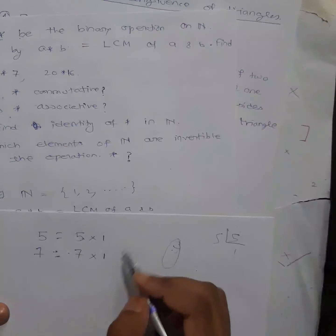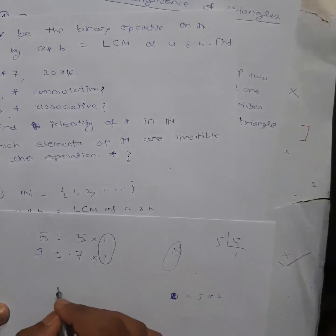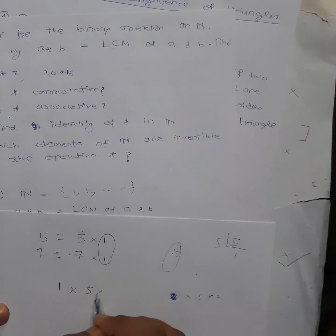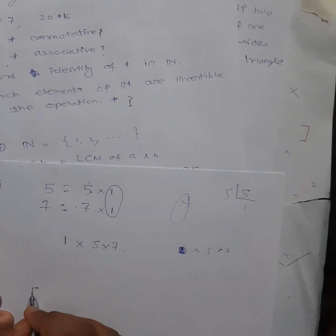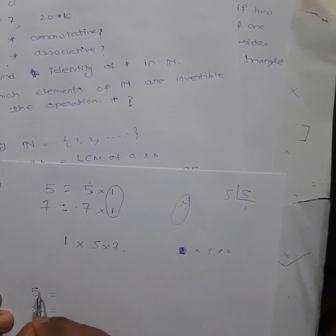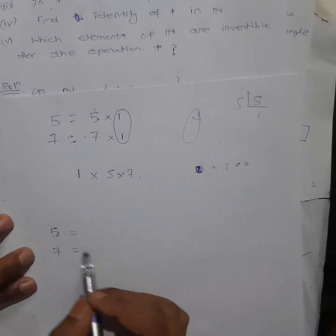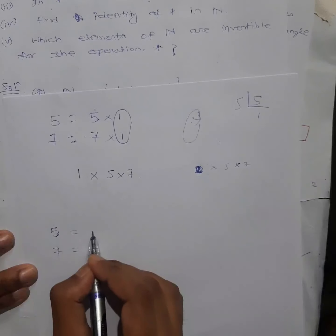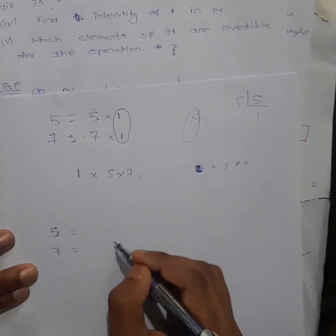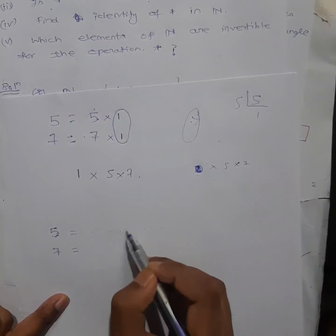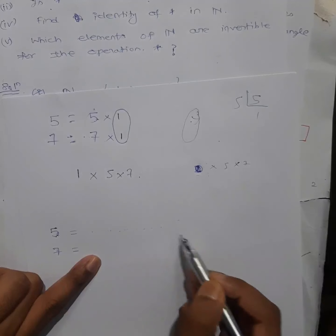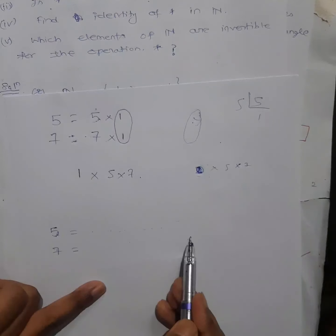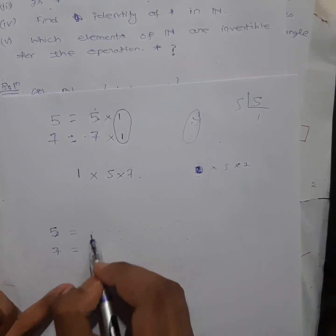Now, this rule is just a method to find LCM. The actual meaning is we find the least common multiple. Try to understand by the word itself — 'multiple'. First I write down all the multiples of one number, then all the multiples of another. Then I see which ones are common. Out of those common ones, I take the lowest one.